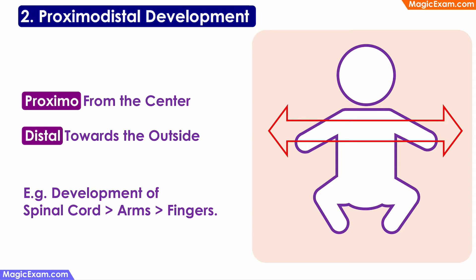The next principle of development that we will see is proximo-distal development. Proximo means from the center and distal means towards the outside. So this principle says that the development of a child happens from the center of the body and moves towards the outside.